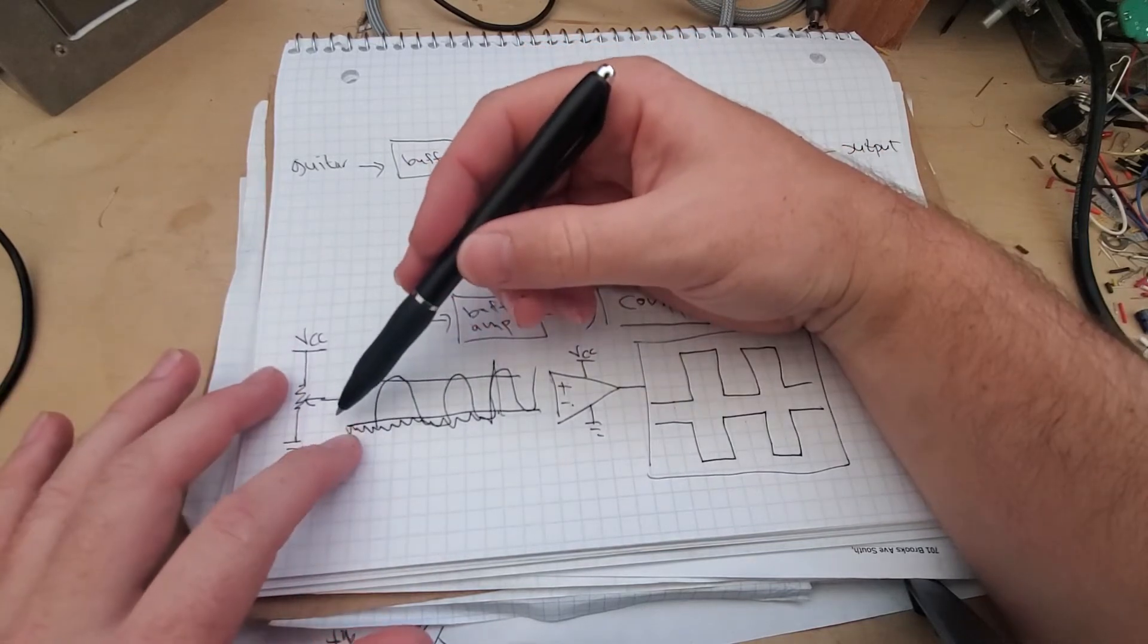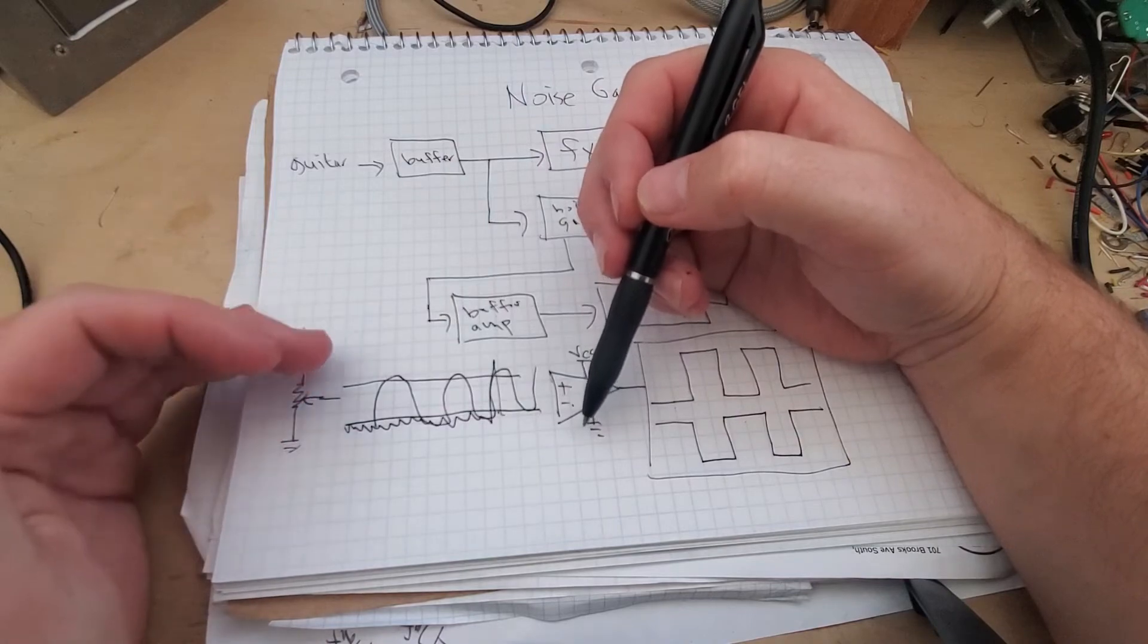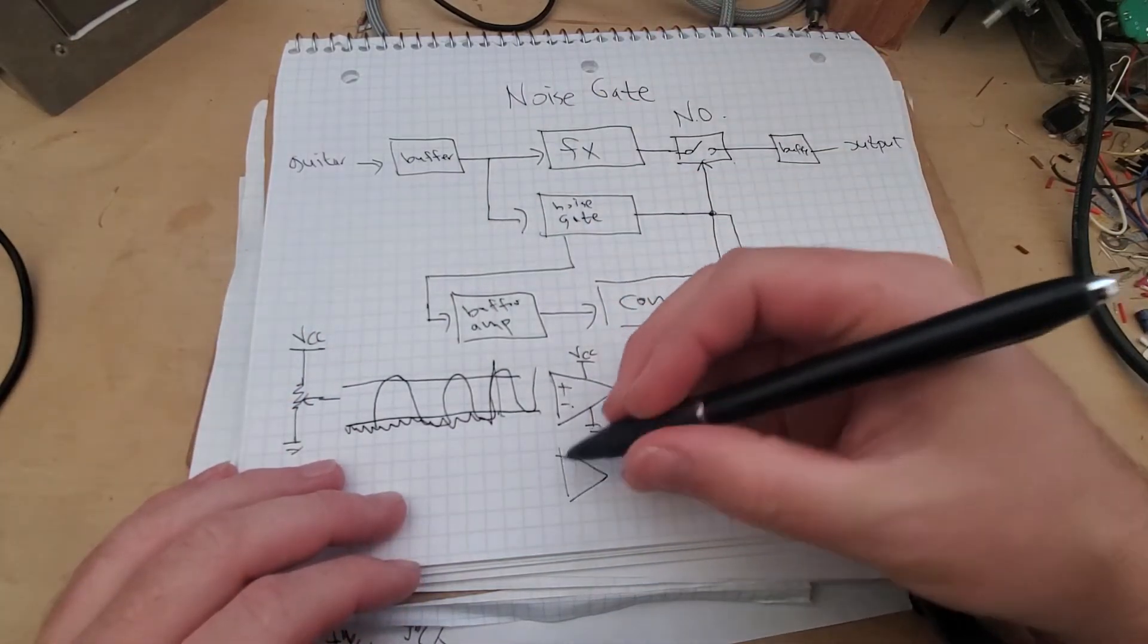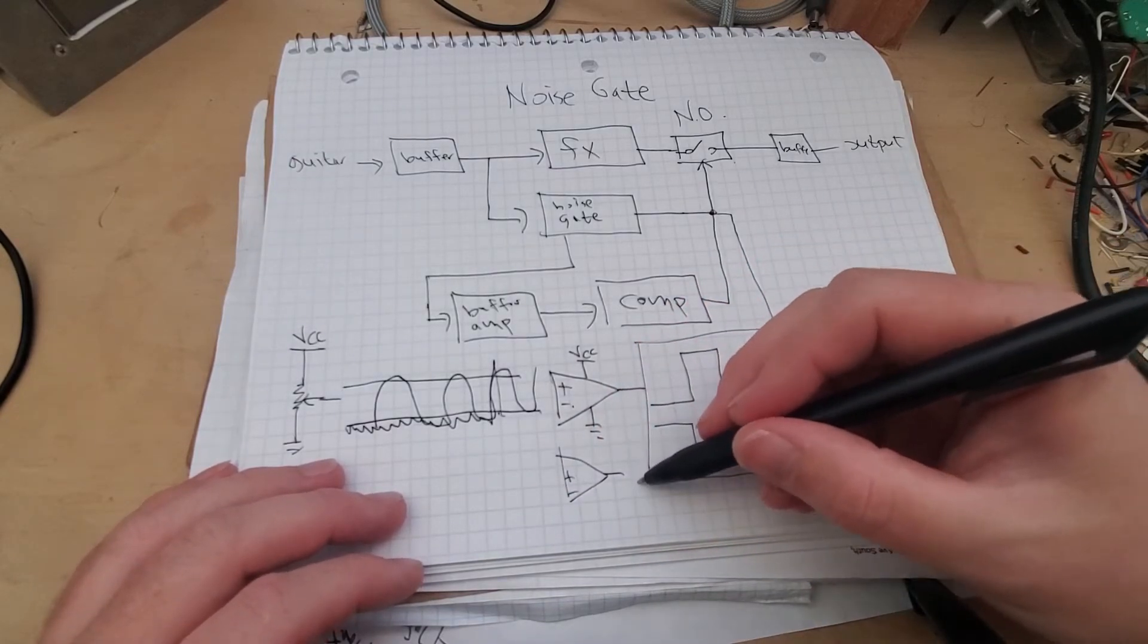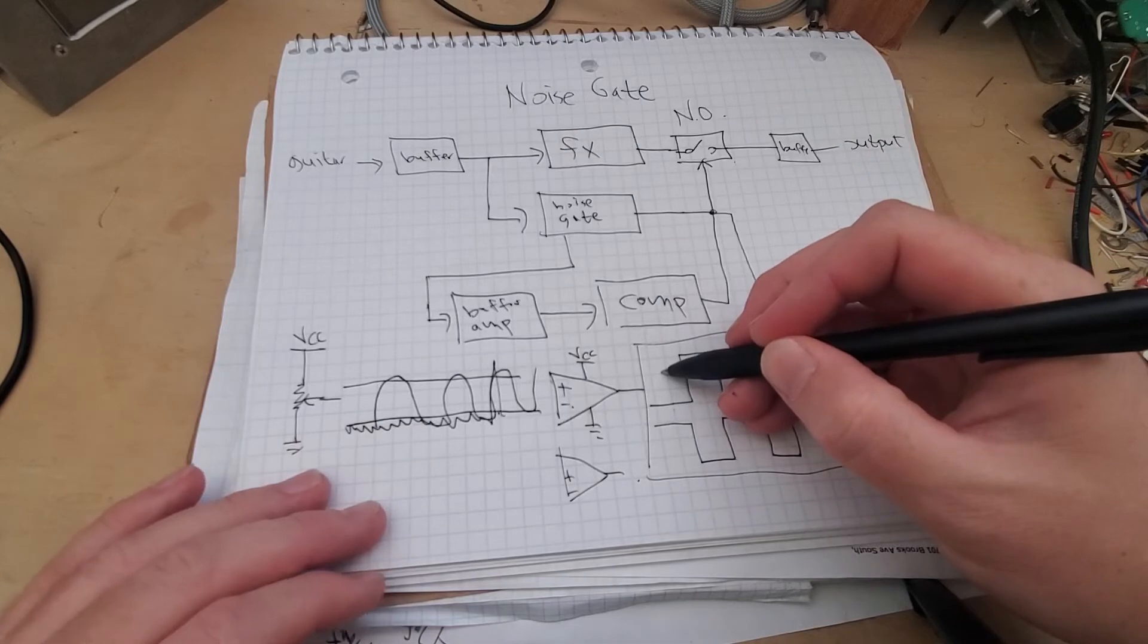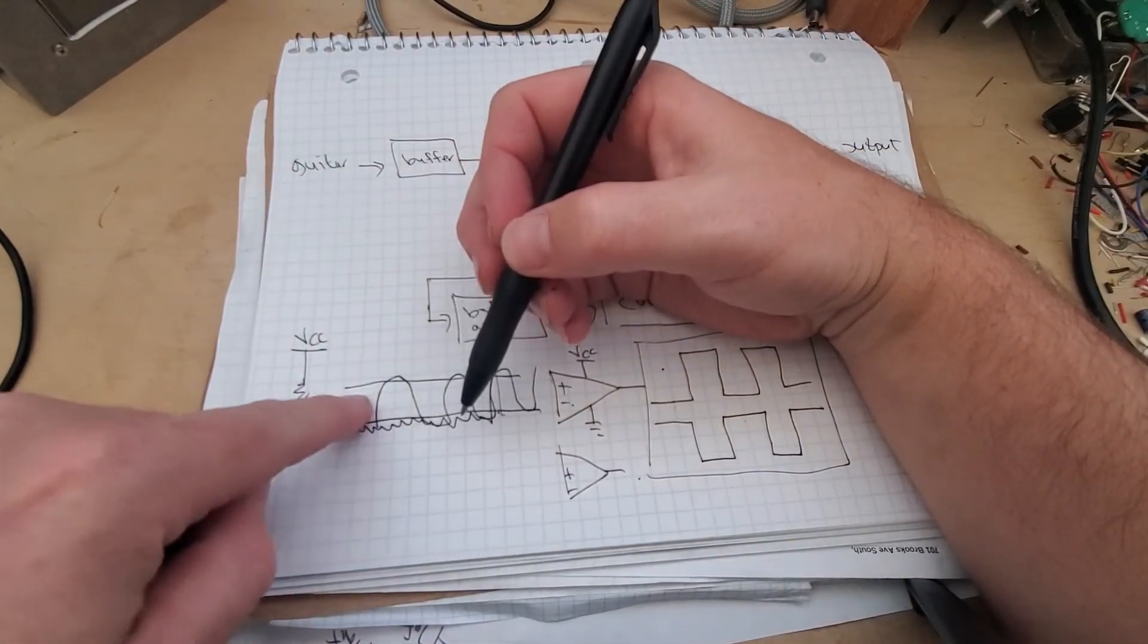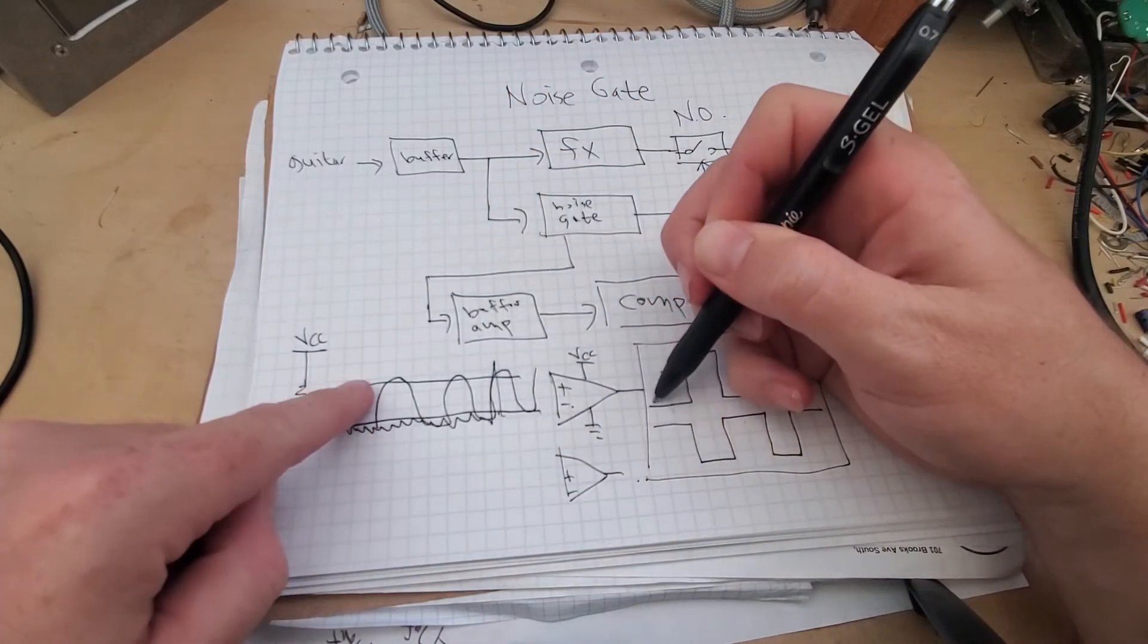Another application for this is you can use multiple comparators and have them driving LEDs so you can get your magnitude level. You can have an array of comparators, and this one turns on LED one, this one turns on LED two, but this one is at a lower threshold and this one's at a threshold that's a little bit higher. So as this LED gets turned on first, then this LED gets turned on, you can have a whole array of those.